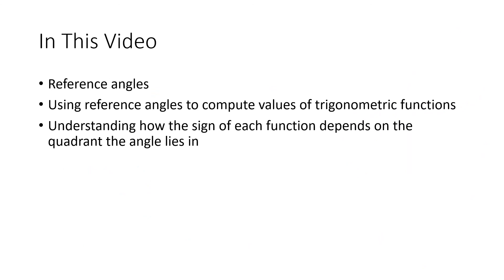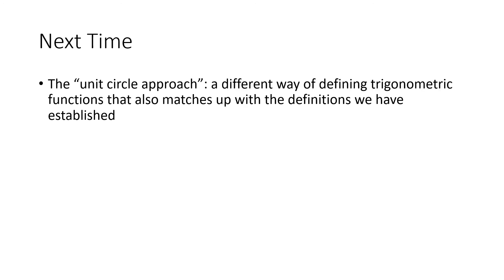So what have we talked about in this video? We talked about reference angles — what they are and how we use them to compute values of trigonometric functions. We also understood how the sign of each of the six trigonometric functions depends on the quadrant the angle lies in, putting aside quadrantal angles. Next time we'll switch gears and talk about the unit circle approach, which is a different way of defining trigonometric functions that matches up with the definitions we've already established. See you then!